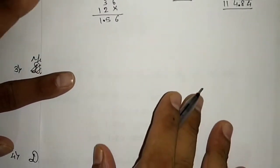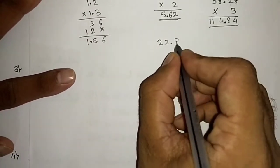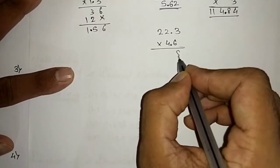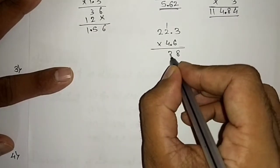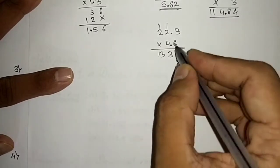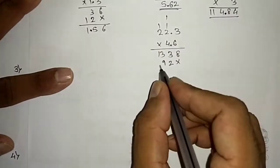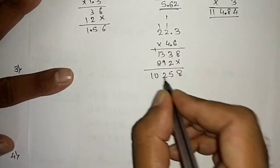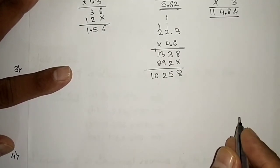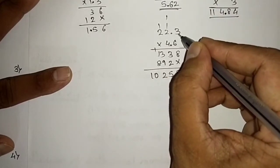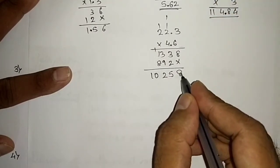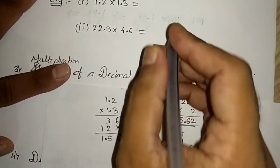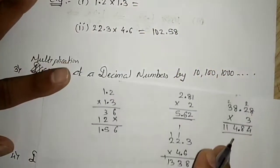Let us take another example: 22.3 × 4.6. Ignore the decimal points and multiply. You get 10258. How many decimal places did we remove? One from each number, so 2 total. From the right side count 2 places and place the decimal point. The answer is 102.58.